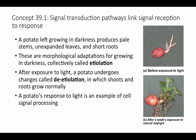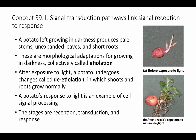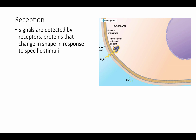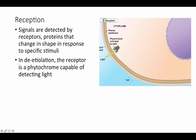As we saw in our earlier unit on cell signaling, the stages are reception, transduction, and response. For reception, there's some kind of signal — in the de-etiolation response it's going to be light. Light is detected by a receptor inside or outside the cell; these are proteins that change shape in response to the specific stimulus. In the case of de-etiolation, the receptor is a phytochrome and the signal is light. This phytochrome is able to detect the incoming light.